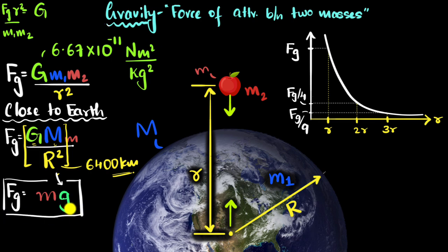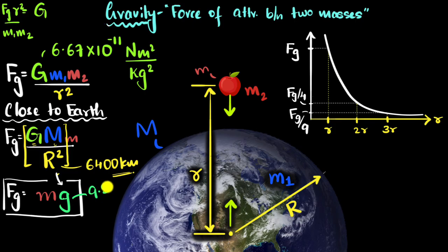Notice this is not a new expression for the force of gravity close to Earth — it's the same as the universal law of gravity, we just simplified it. Now what is the value of g? We can substitute the values of capital G, mass of the Earth, and radius of the Earth. If you do that, you'll get the answer to be about 9.81. From Newton's second law, if this is a force and this is mass, this must be acceleration.